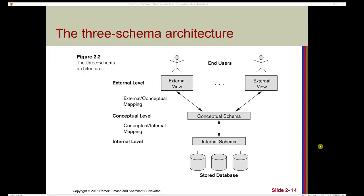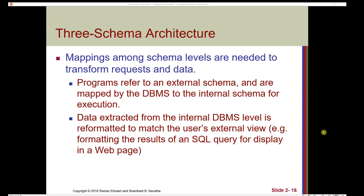Here we have a representation of how the different layers of the schema work together. End users see the external view, the internal level has the internal schema, and the conceptual schema provides a connection between the two. Think of a house blueprint: as a person designing a floor plan, you don't need to know what materials the floor will be made of — that's the conceptual or external level. The builder needs to know the materials and exactly how things will be laid out — that's the internal level. Mappings are required among schema levels to transform requests and data. For example, formatting the results of a SQL query for display in a web page.